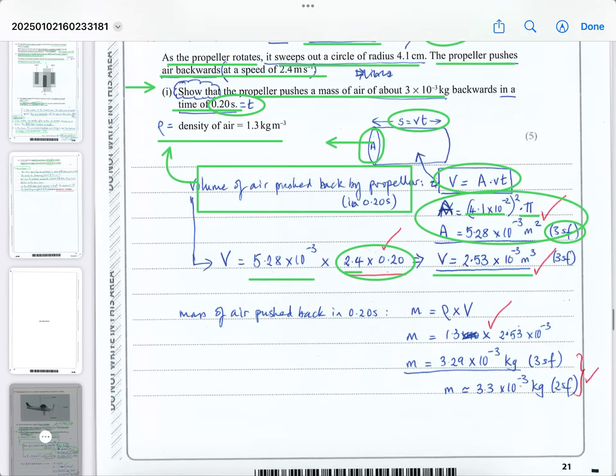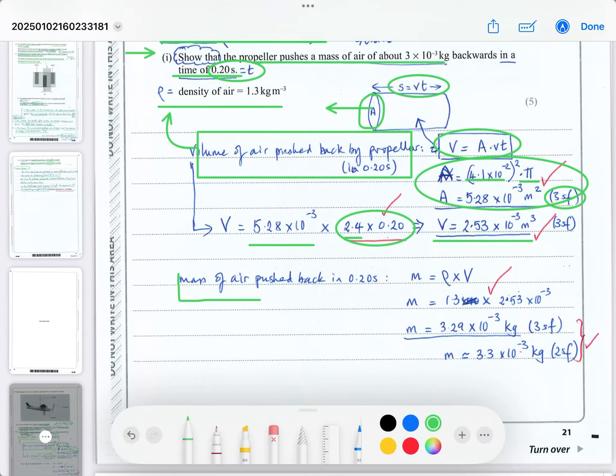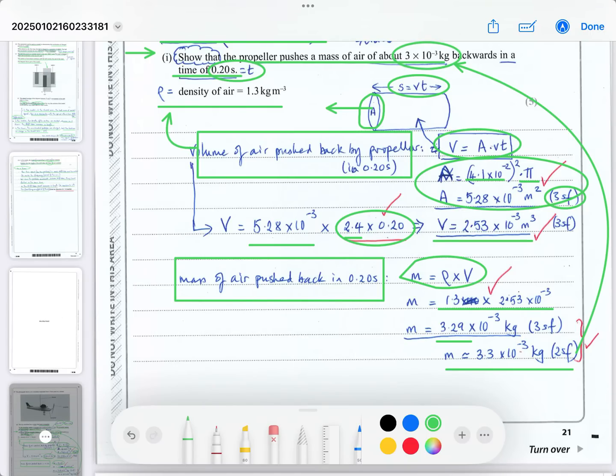Then use mass = density × volume. Putting in 1.3 times the volume gives 3.29×10⁻³ kg to three significant figures, but round to two significant figures based on the data provided. Then show it equals approximately 3×10⁻³ kg to one significant figure, as requested.